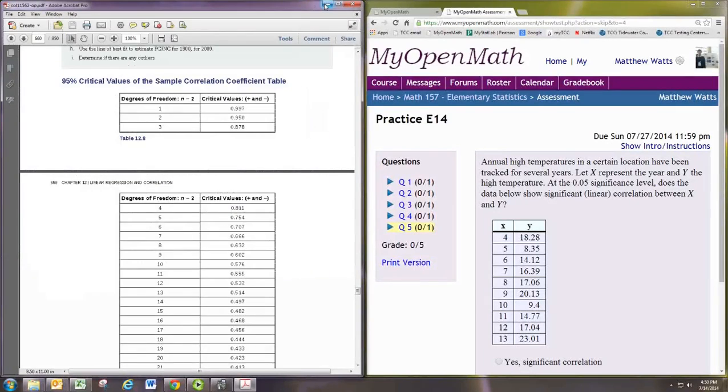In this video, we'll see how to do practice problem 5 from experience 14. Annual high temperatures in a certain location have been tracked for several years. Let X represent the year and Y the high temperature. At the .05 significance level, does the data show significant linear correlation between X and Y?